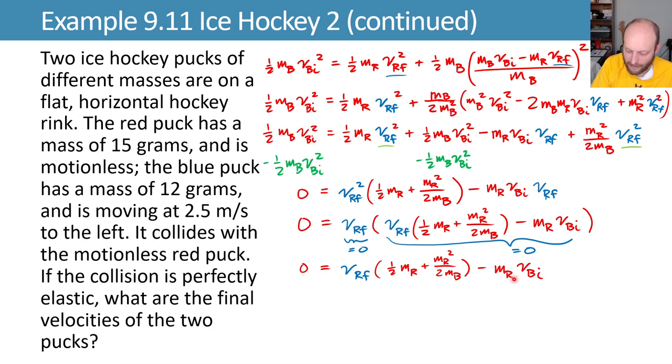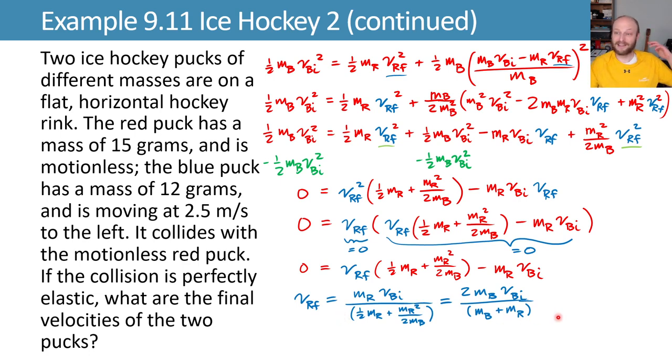And now we can add mr vbi to both sides, divide by this coefficient, and we get vrf in terms of our system parameters. This can actually simplify a little bit because we have an mb on the bottom here. We might want to multiply by mb on the top and the bottom to cancel out that mb. And while we're doing that, we might as well multiply by two on the top and the bottom to cancel out the one-halves in our denominator. So we end up with two mb vbi over, also we've got mr's on both of these terms, so you can factor that out and cancel that out. So it simplifies, we get not a crazy ugly expression at the end. You can plug in the values from the problem statement and get a final velocity of the red puck of 2.2 meters per second to the left in the direction we had assumed.